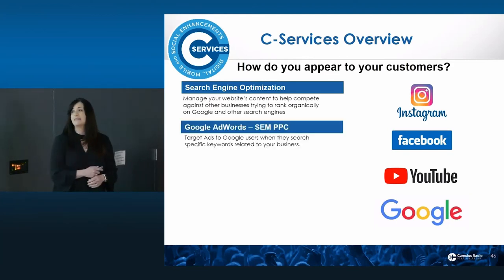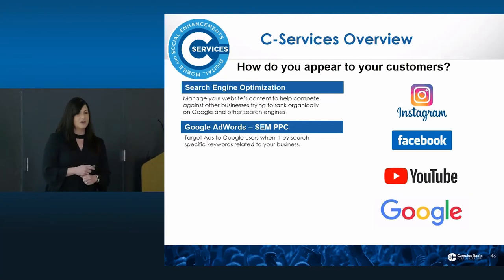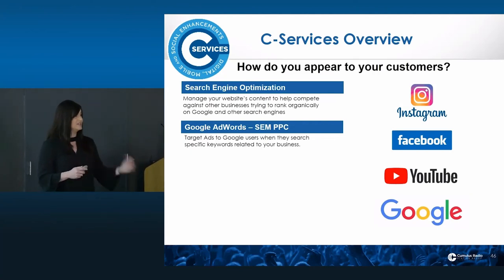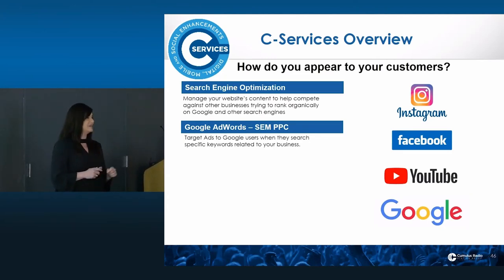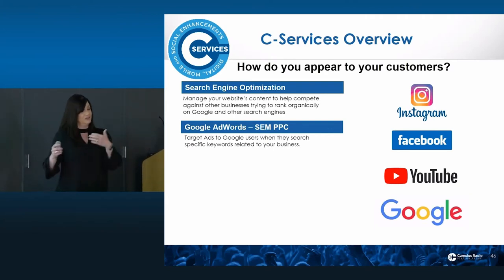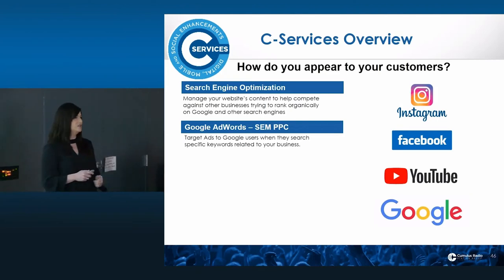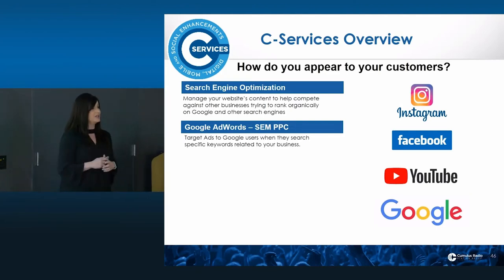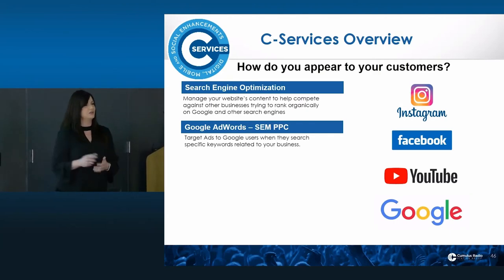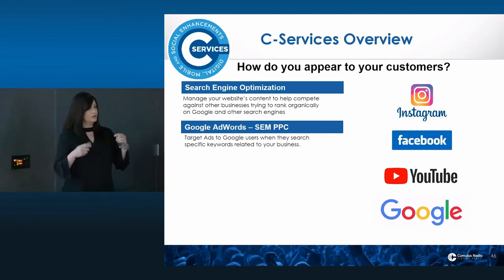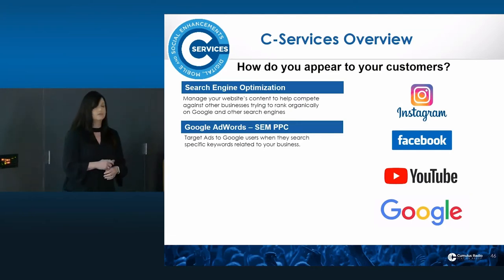One way to address that is with Google AdWords — basically greasing the palm of Google. Even if your website isn't ranking yet, you still want to show up on top. You pay Google and they'll let your ad pop up at the top. We define the products, services, and keywords that you want to appear for. Then when somebody clicks on that ad, that's when you pay — Google AdWords is a pay-per-click product. You can serve as many impressions as you want, but once somebody clicks, that's when you pay, and we manage that budget for you.